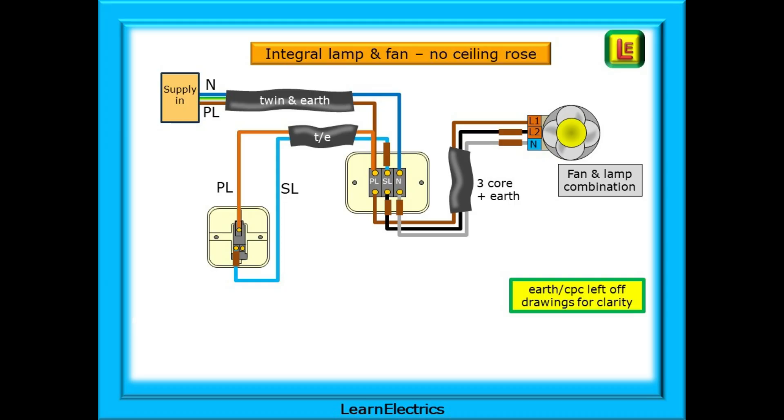And this is how they were wired. Direct to the isolator switch. Looking at it you can see that it has the same connections as a three plate ceiling rose. In this case twin in earth cable went from the consumer unit to the isolator and also from the isolator to the light switch. Three core plus earth strapper cable was used from the isolator to the fan and lamp combination. Easy when you've seen it done.